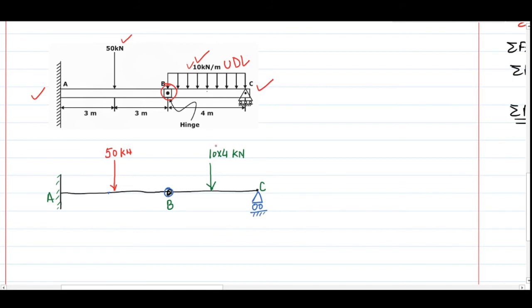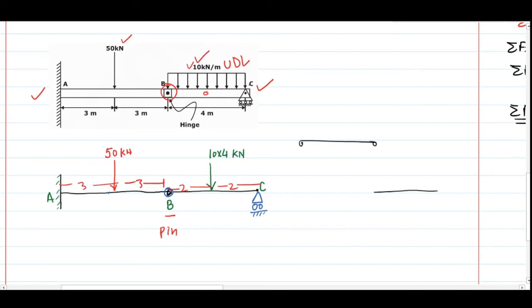The equivalent point load of 40 kN is placed at the midpoint of BC, so the distances are 2 and 2 from B and C respectively, and 3 and 3 on the other span. Since point B is a pin joint, we can make two separate free body diagrams: one for section AB and one for section BC.